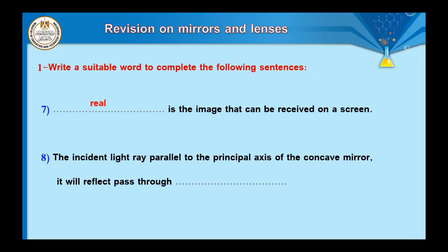Question number eight: an incident light ray parallel to the principal axis of the concave mirror will reflect passing through the focus — this is the first path of ray. When the incident ray passes through the focus, it will reflect parallel to the principal axis — the second path. The third path: when a ray passes through the center, it reflects back on itself, because the angle of incidence equals the angle of reflection equals zero.